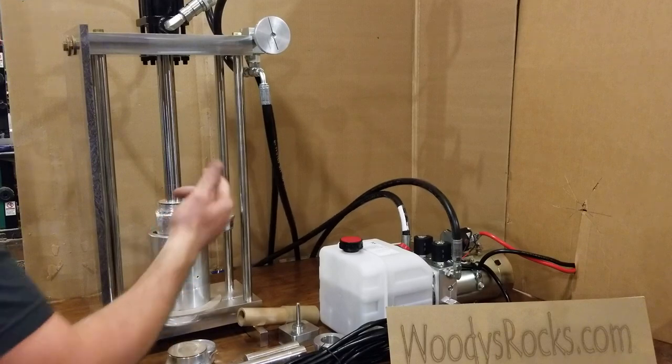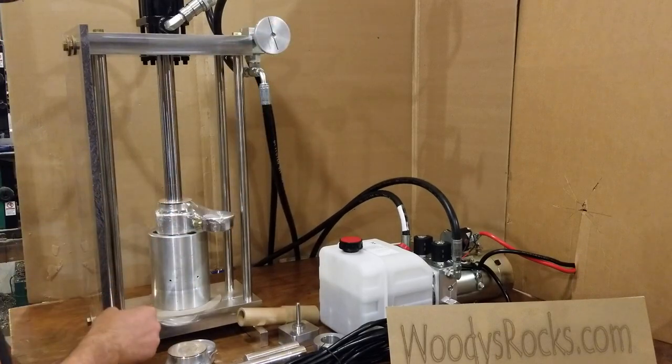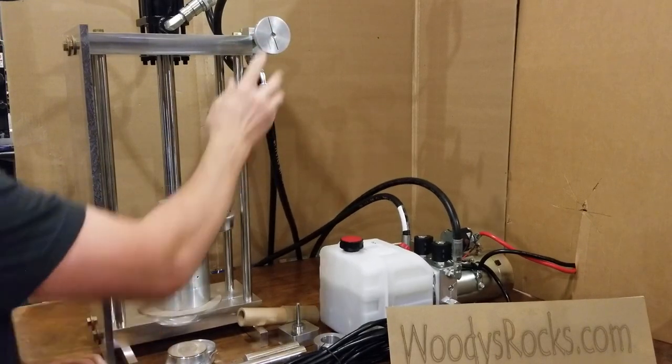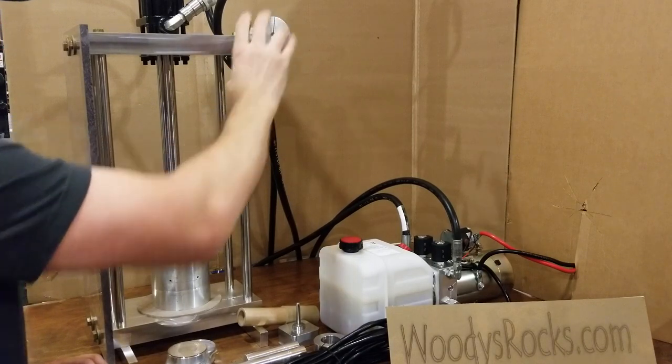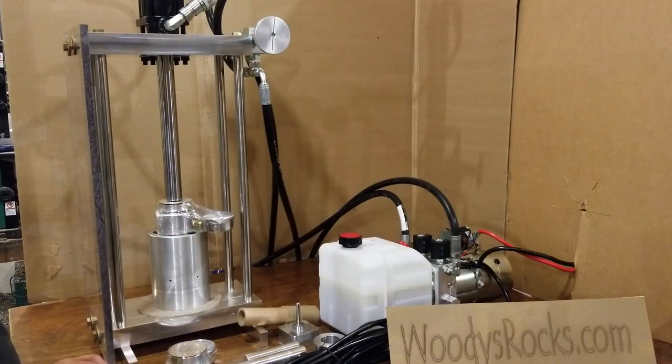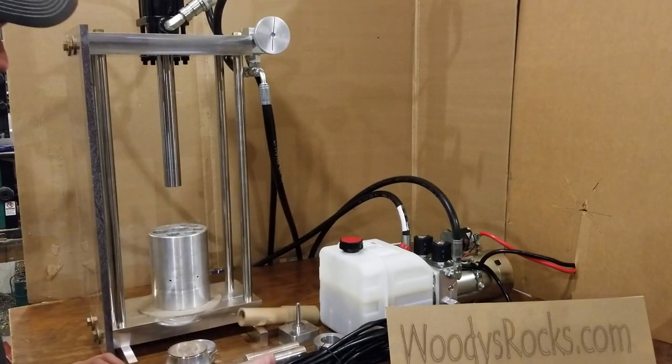And it's at fifteen hundred, so I need to go to three thousand. I just turn the knob. Bam, three thousand PSI and we're good to go. Now I'm ready to press a rocket.